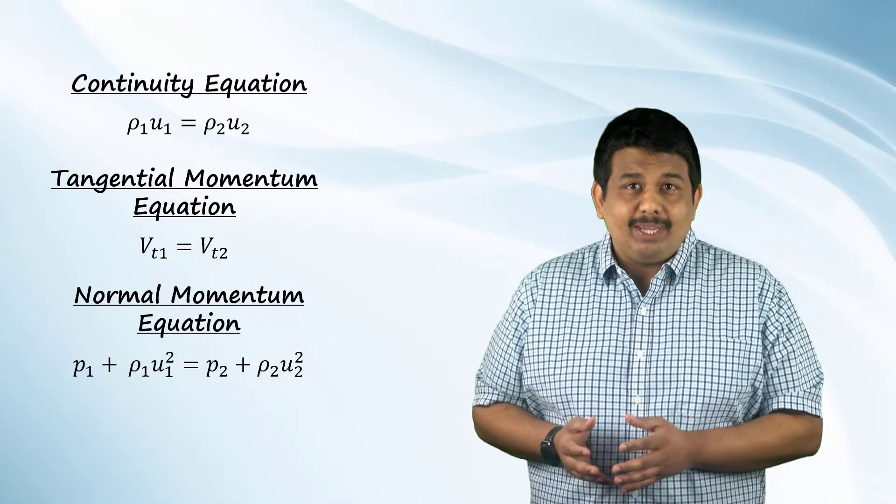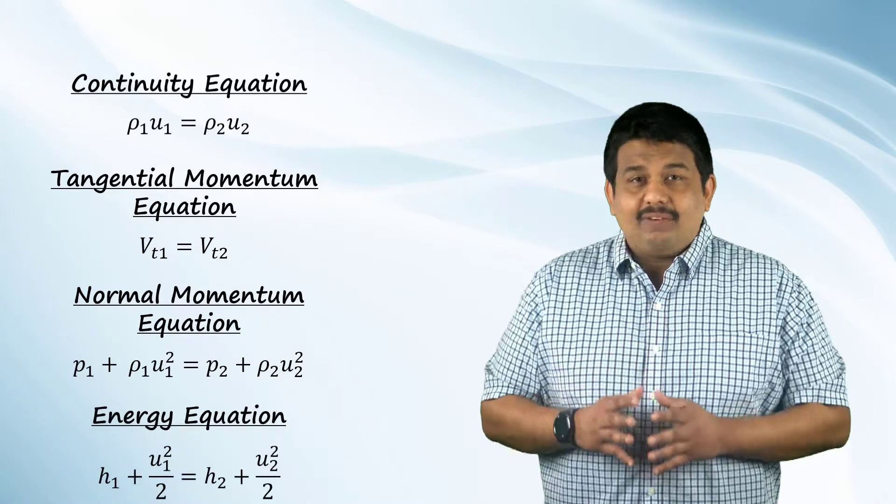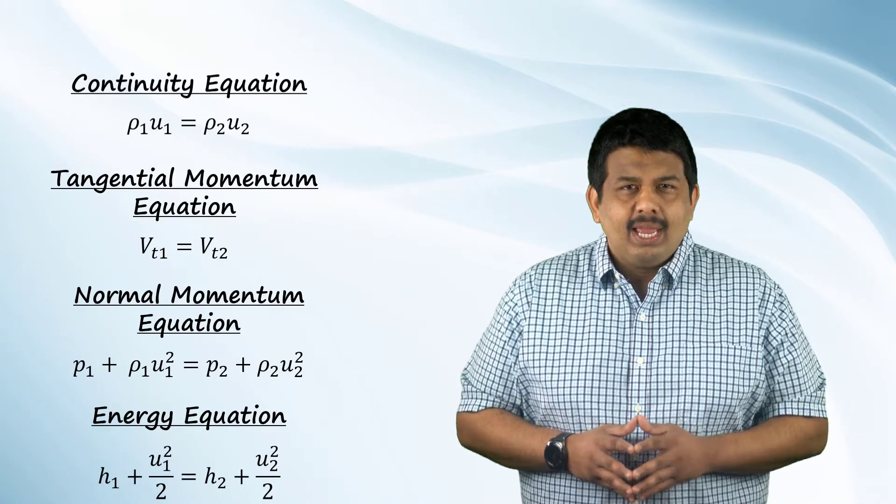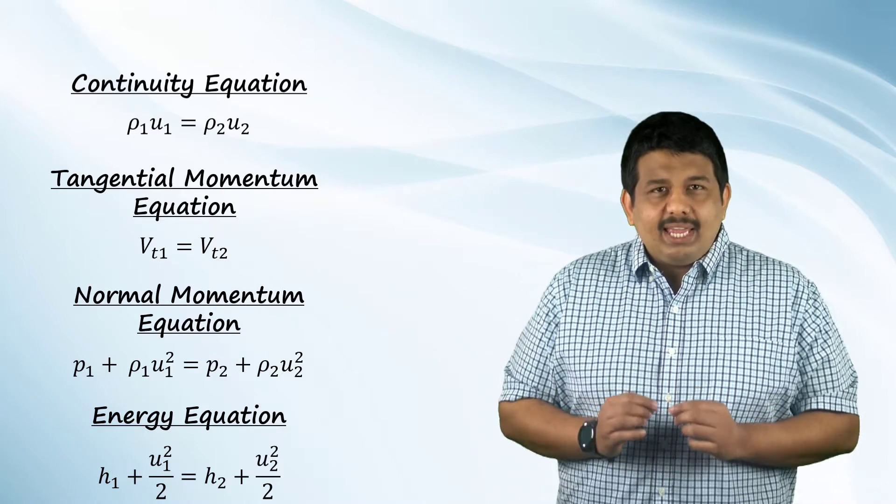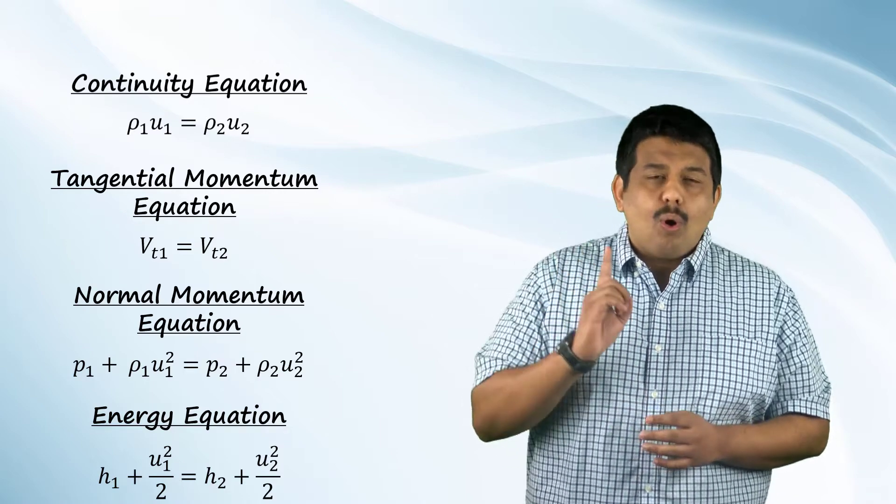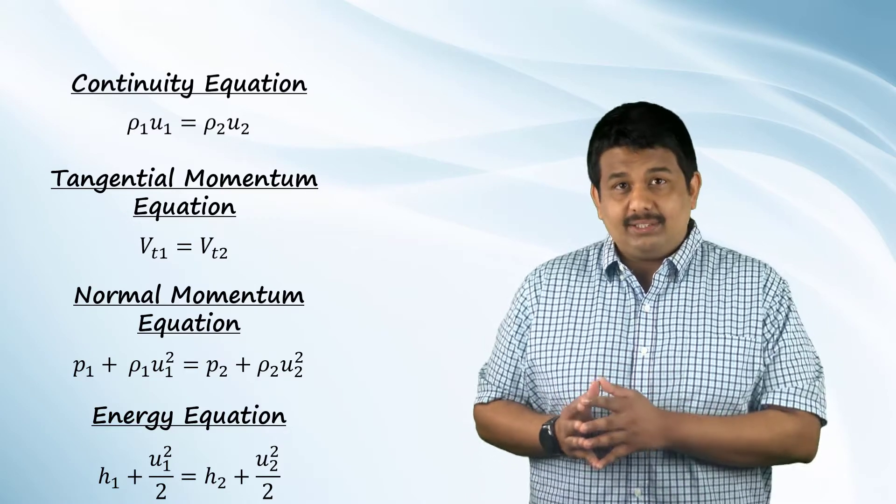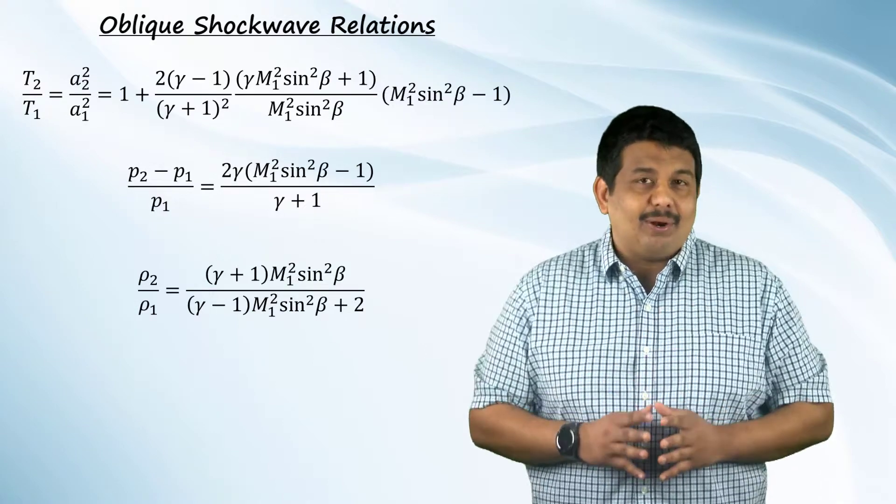The normal component of the momentum equation and the energy equation take the following forms for an oblique shock wave. If we observe closely, the governing equations of the flow through an oblique shock wave are dependent only on the shock normal velocity, i.e., U1 and U2. This means that all the theory developed for estimating flow properties through a normal shock wave in the previous lesson will hold as is for an oblique shock. The only difference being that for the upstream Mach number, we use the shock normal Mach number which is shown below. So, for an oblique shock, the variation of flow properties across the shock is given by the following relations.